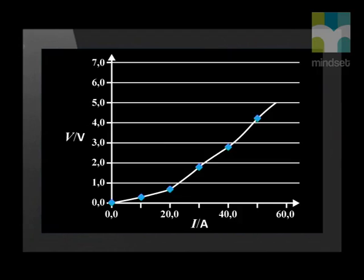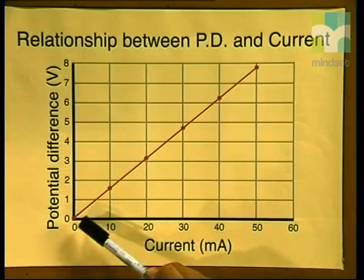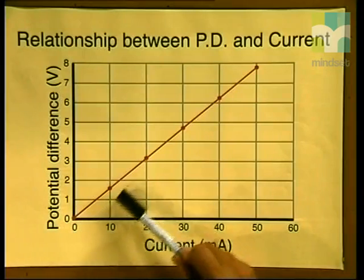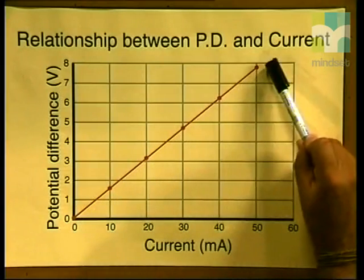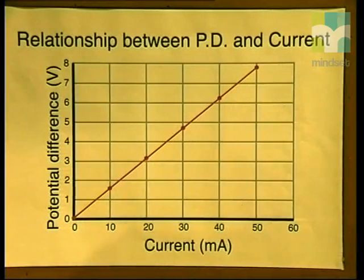We use a graph of these values to understand the mathematical relationship between them. I have plotted current versus potential difference, with current on the x-axis and potential difference on the y-axis. Do you remember that in the experiment when we used a resistor, our results gave us a straight line graph?